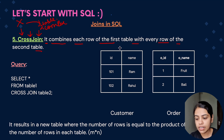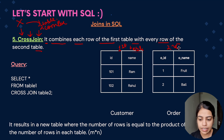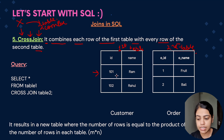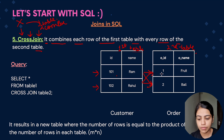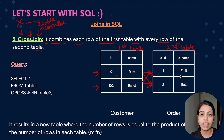Consider that the customer table is the first table and the order table is the second table. According to the definition, each row of the first table is combined with each row of the second table. So first we get 101 Ram with order one fruit and two ball, and then for the second row, 102 Rahul with one fruit and 102 Rahul with two ball.